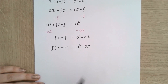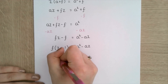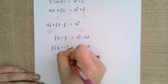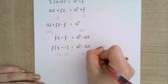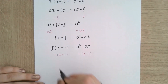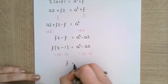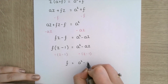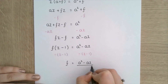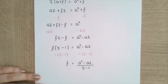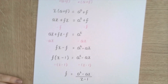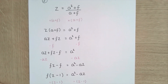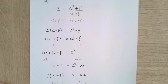And then to get f as my subject I'm going to divide by the whole bracket of z minus 1 on both sides. So I get f is equal to a squared minus az all over z minus 1. And there we go — I've made f the subject of the formula I originally started with.